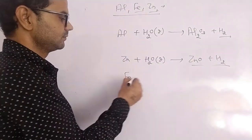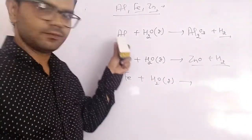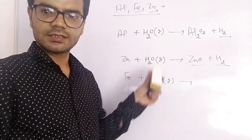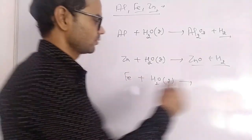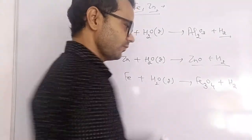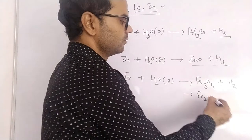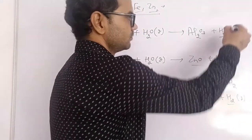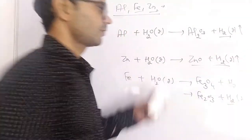Similarly for iron — aluminium, zinc, and iron will not react with cold water or hot water, they will only react with steam. Steam is water at 100 degrees Celsius. The product is the metal oxide plus hydrogen gas.